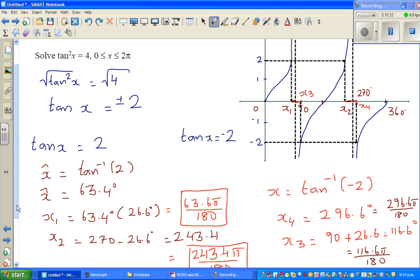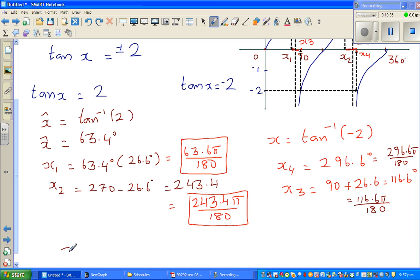Let us check all these four answers. Let us write all the four answers. Let's only write the x's. The x's in ascending order is 63.4 degrees, then you have 116.6 degrees, then you have 243.4 degrees, and finally 296.6 degrees.